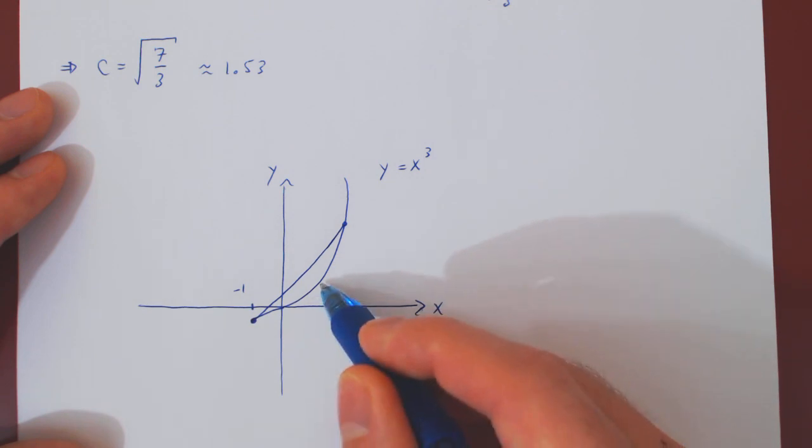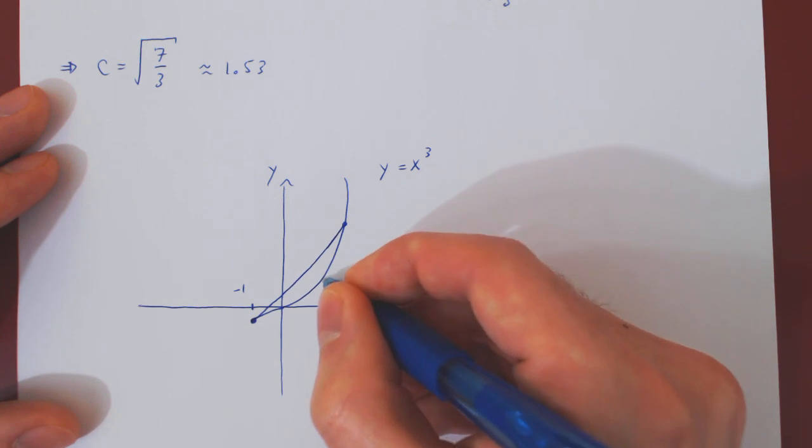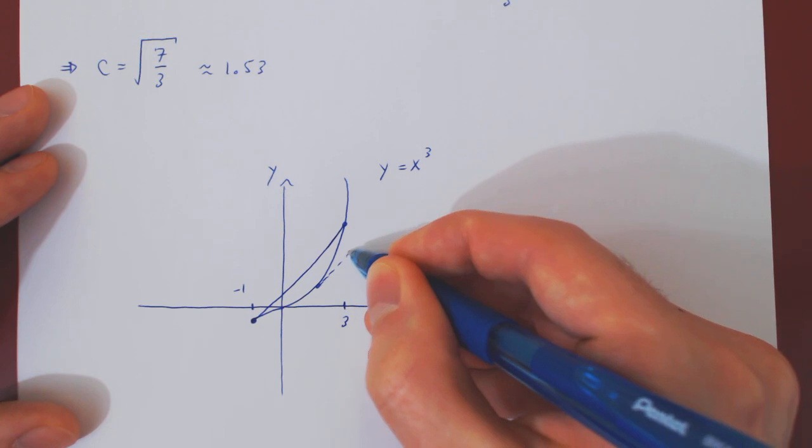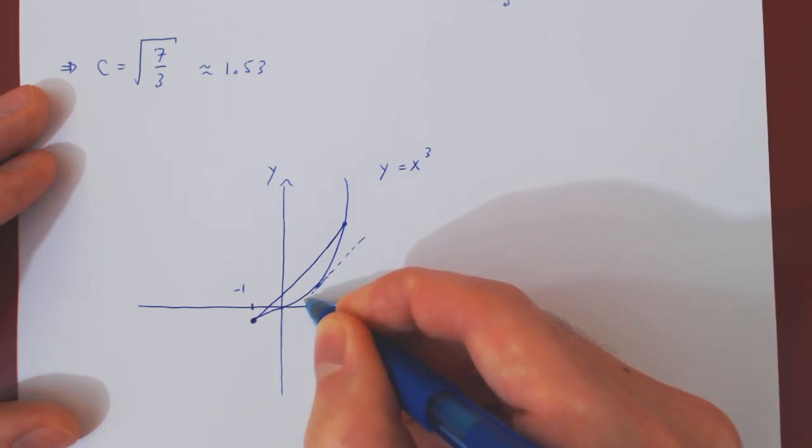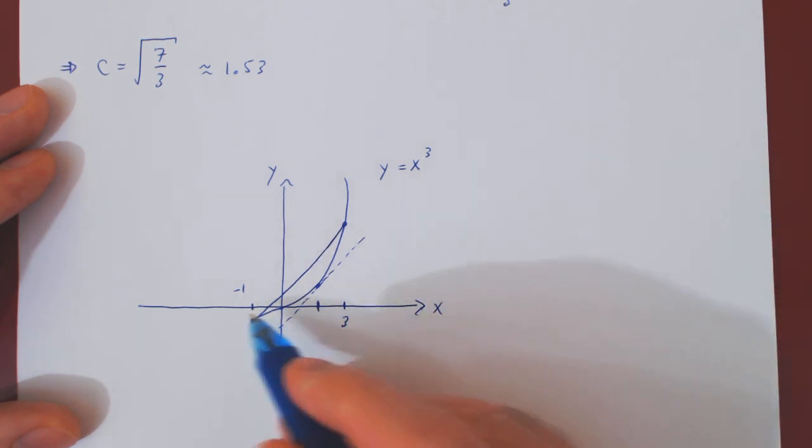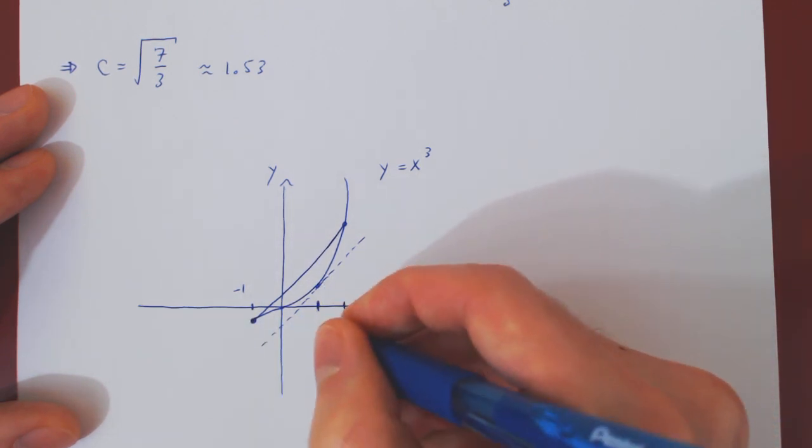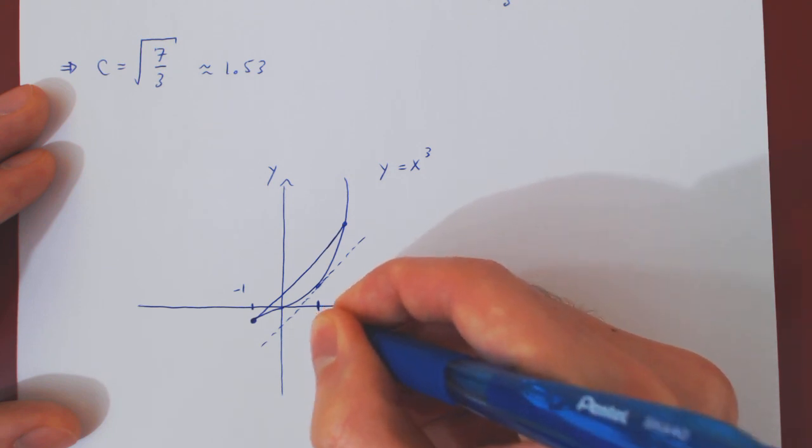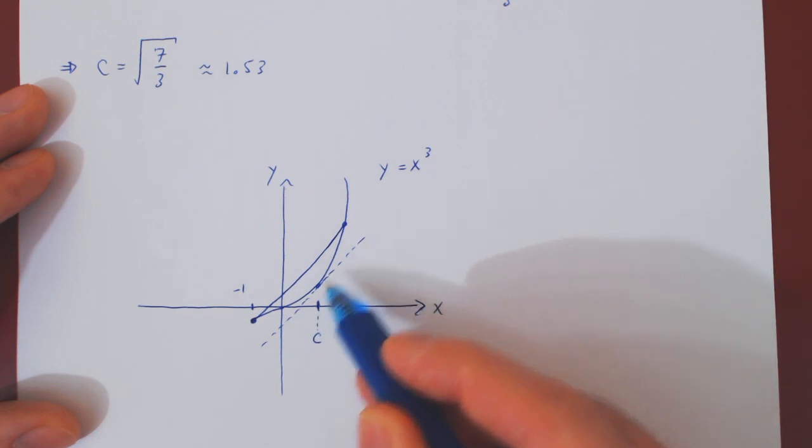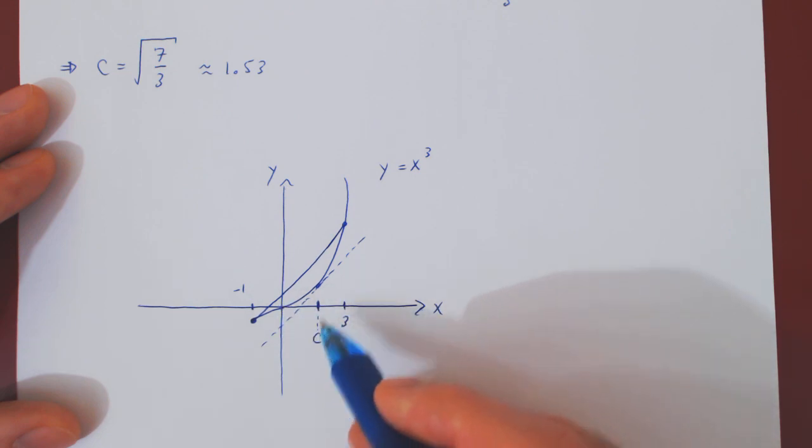And now if we look for a point where the derivative of the function is equal to this slope, well, the lines must be parallel. Well, so it looks roughly here. So from a very rough sketch of x cubed, from negative 1 to 3, the point c, where the derivative of the function is equal to the average slope of the function, looks to be about in the middle of 0 and 3, so about 1.5.